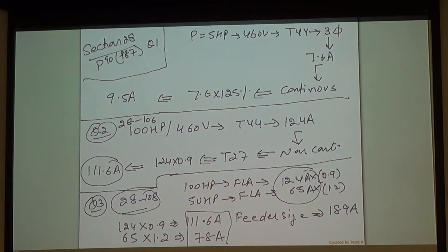In a continuous motor, you pick your highest FLA and get that multiplied by 125 and add the rest.